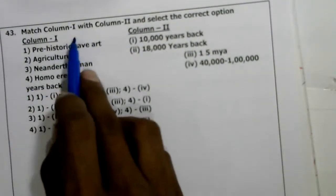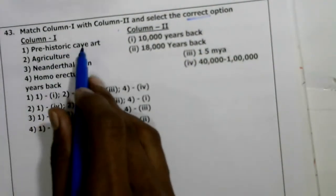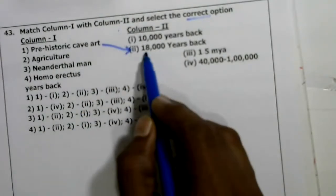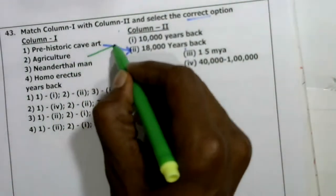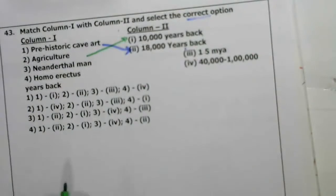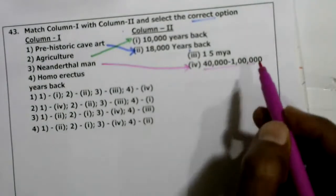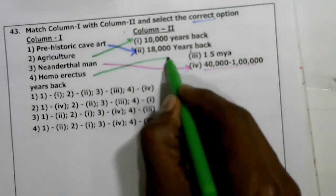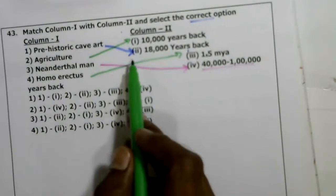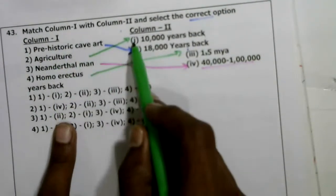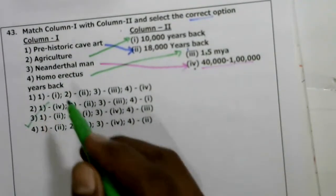Forty-third question: match column one with column two. Prehistoric cave art was found about 18,000 years ago. Agriculture was practiced about 10,000 years ago. Neanderthal man was found 40,000 to 1 lakh years ago. Homo erectus was found about 1.5 million years ago. The correct matching gives the third option as the answer.